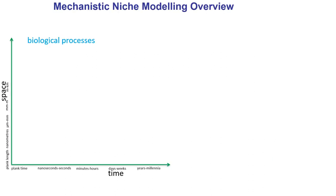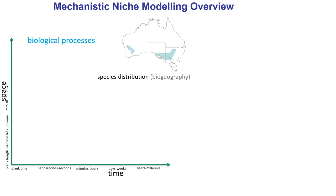Biological processes are of course happening on a wide range of timescales. The process that we're really all interested in here is the species distribution. As Towne said, a really simple but really important ecological question is: why are species in some places and not in others? This is certainly a question that's always fascinated me — understanding why a given species' distribution limits look like they do, operating at a relatively large scale of space and time in the hierarchy of biological processes.